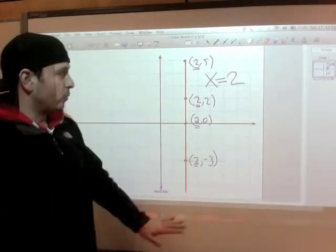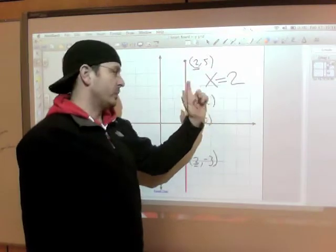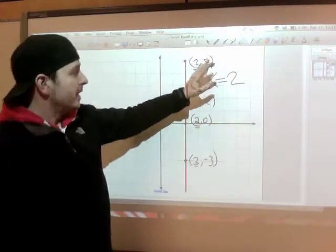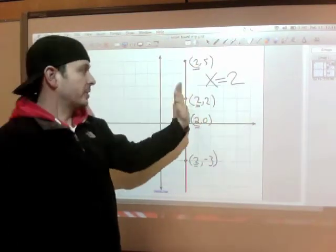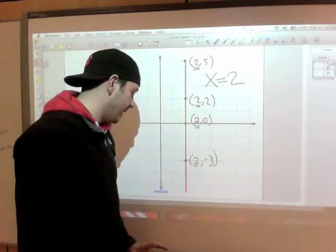And that's in standard form — the x's come first, numbers on the other side. Now let's look at a horizontal one.